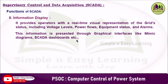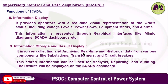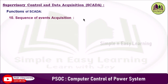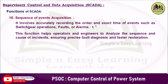The ninth function is information storage and result display, which involves collecting and archiving real-time and historical data from substations, transformers, and circuit breakers. Results are displayed visually through SCADA dashboards via charts and reports, allowing operators to interpret system performance and detect anomalies. The tenth function is sequence of event acquisition, which accurately records the order and exact time of events such as switchgear operations, faults, and alarms. This enables precise fault diagnosis, faster restoration, and helps identify root causes to optimize protection and control strategies.